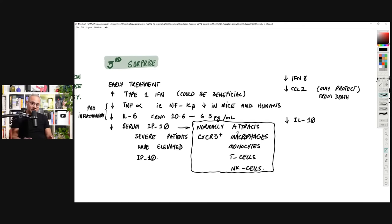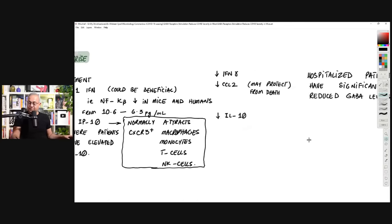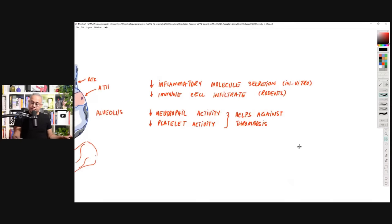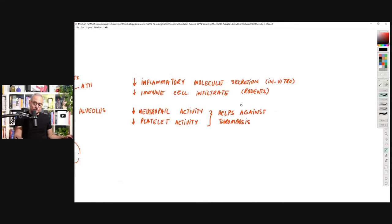Interleukin 10 was reduced. In general, cytokines, chemokines, immune cells behavior, and the lung tissue cells behavior, these were all modulated towards a lower or lesser severe disease, lesser inflammation, better protected cells. So finally, inflammatory molecule secretion, in vitro, is reduced by GABA for human cells, reduced immune cell infiltration for rodents, neutrophil activity is reduced, which is very useful, platelet activity is reduced by GABA, which is also very useful collectively to reduce the thrombosis.